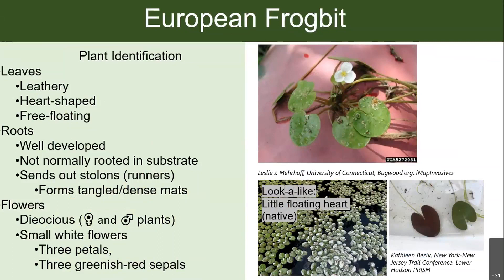One of the main differences is the wavy leaf margins on the native plant, whereas frogbit has smooth, entire margins. As you can see in the top image, there are several leaves in a cluster per stem with frogbit, whereas with little floating heart you're only going to have one leaf per stem. European frogbit also has a midvein that has aerenchyma, which is a spongy, air-filled tissue that allows its leaves to float and can appear free floating.